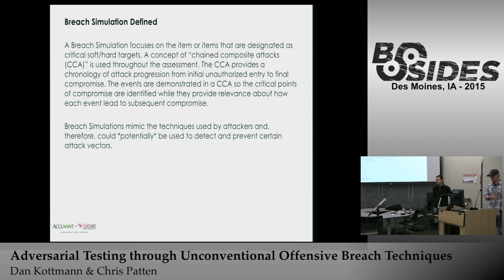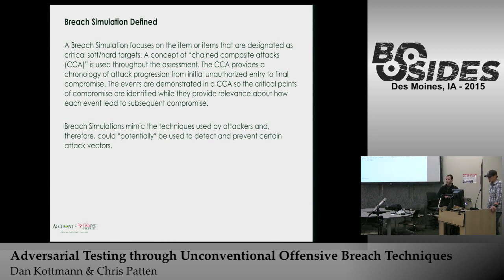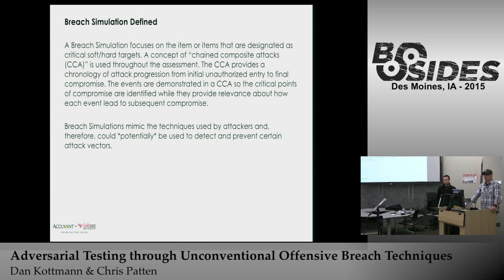The chain composite attack is interesting because in a traditional pen test you have no context when writing up the report. You may have an information disclosure flaw you rate as low severity. But in a breach assessment, we can take that piece of information, couple it with something else, and it suddenly becomes a critical finding. Context matters — a standalone system not connected to the rest of the network isn't necessarily high severity, but one that leads into a highly secured environment increases in severity.